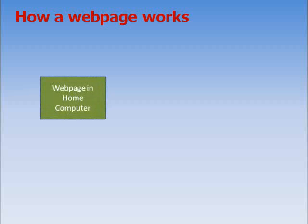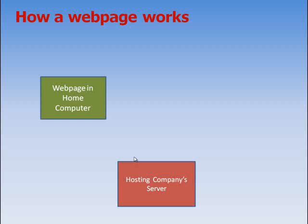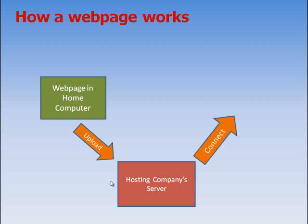Let me give you the process of how a web page works to get it online. The first thing you need to do is to design your web page on your home computer — at this stage only you or those having access to your computer will be able to see it. Next, assuming you have a hosting account, you upload your web page from your home computer to the hosting account. Once this is done, the hosting company will connect your web page or website to the world wide web, meaning to get it online.